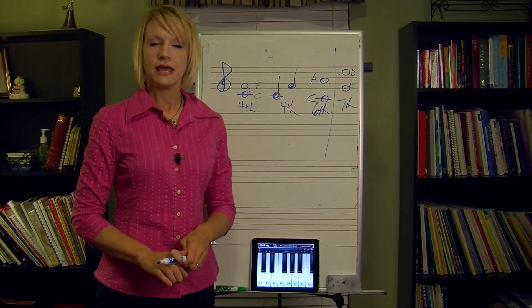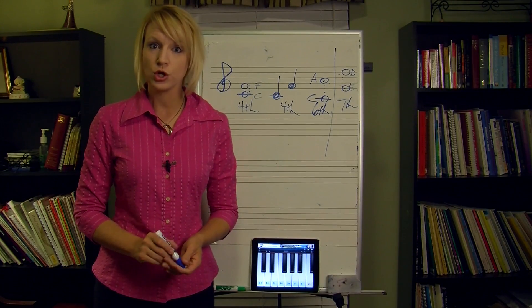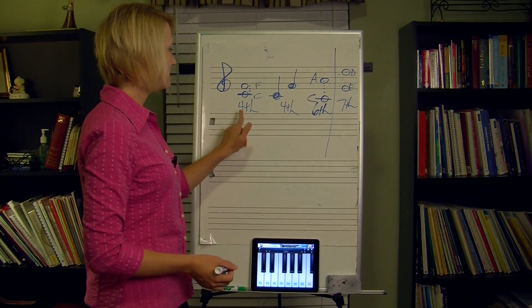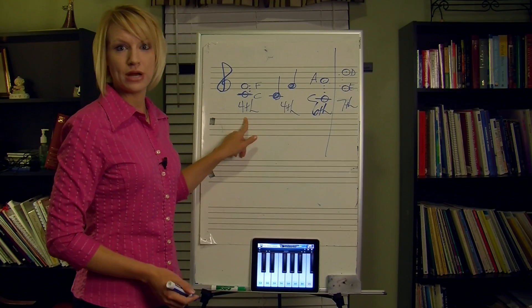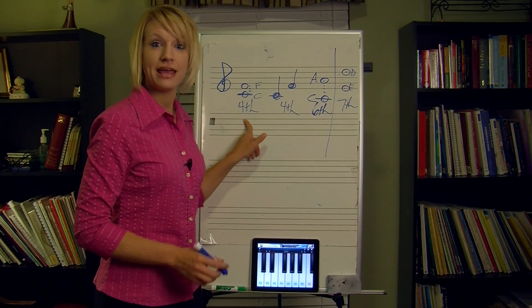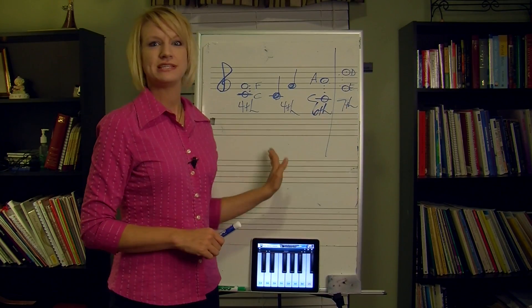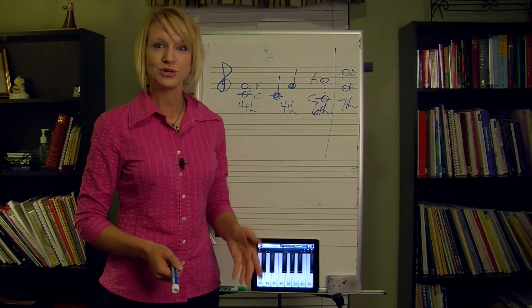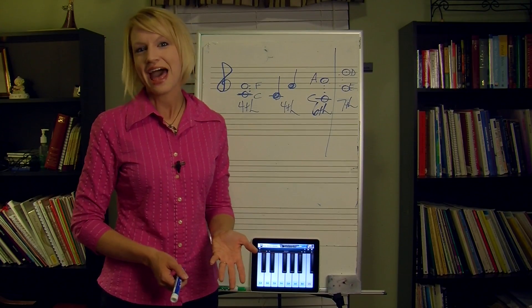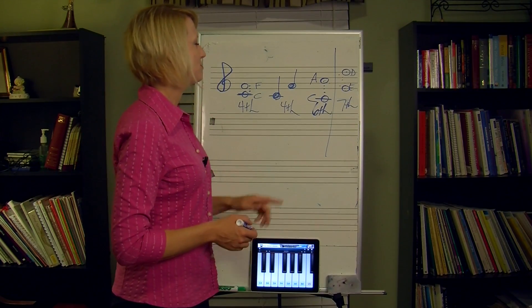Now when you take ear training classes, sometimes you learn what these sound like. And just as an example, I always learned when I was growing up that a fourth sounded like, here comes the bride. And you can learn different tricks for sixths and sevenths. And if you play those on your own, you might think of some songs that have specific intervals in it. Like a sixth is, my Bonnie lies over the ocean.